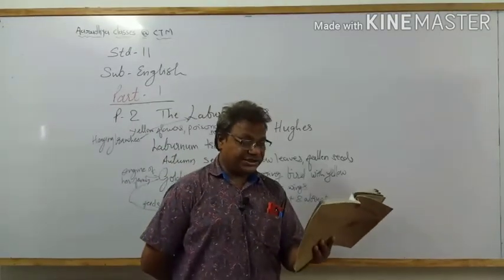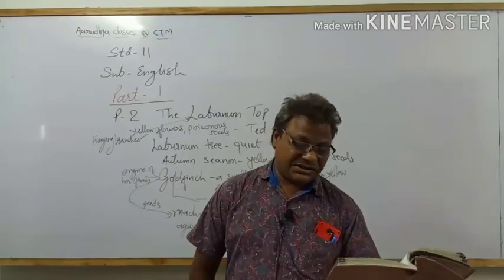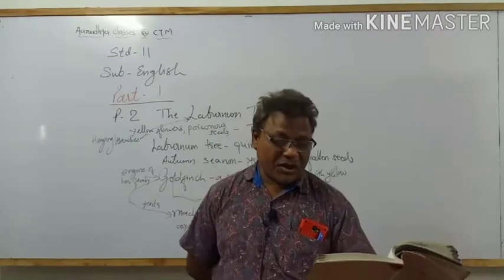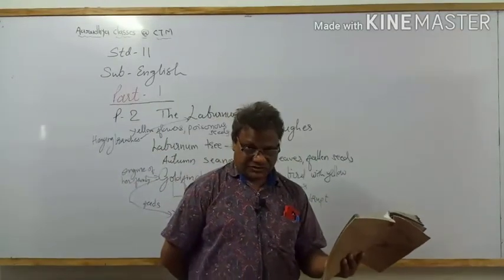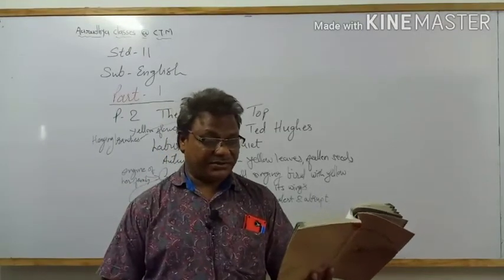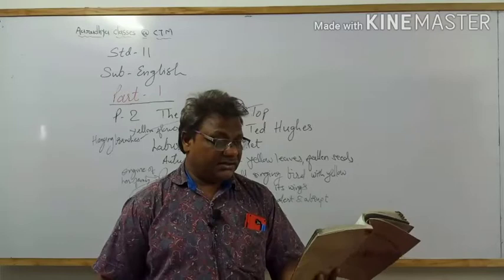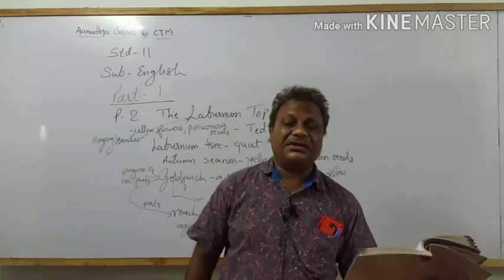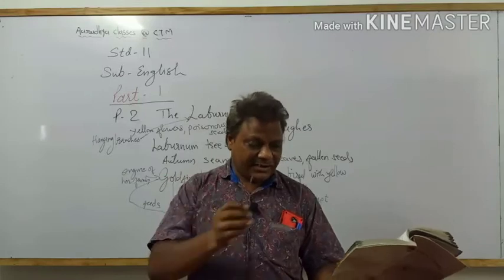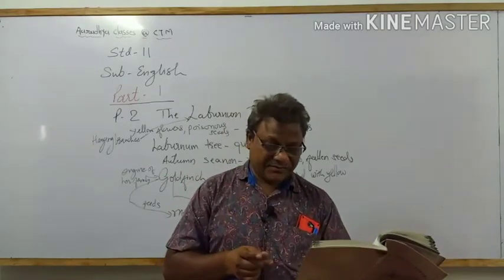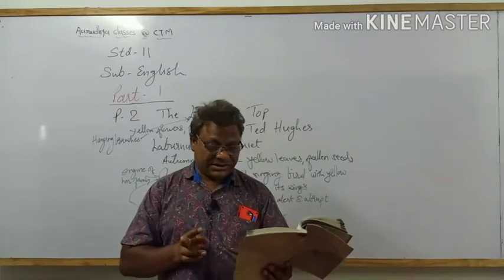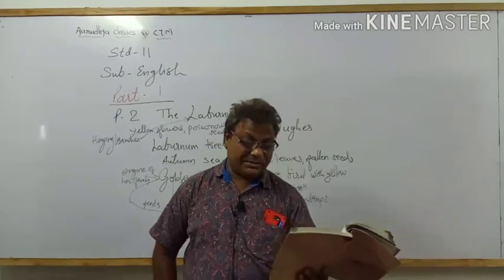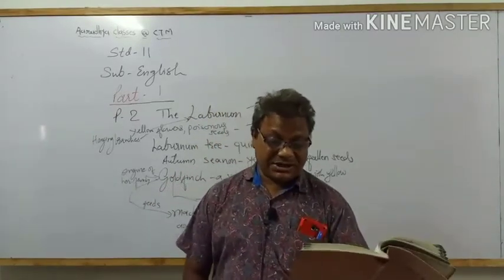In the second stanza: 'Till the goldfinch comes with a twitching chirrup' — chirrup is a sound produced by the goldfinch, so it is onomatopoeia. 'A suddenness, a startlement at a branch end' — the S sound is repeated in 'suddenness' and 'startlement', so it is alliteration. 'Then sleek as a lizard and alert and abrupt' — the goldfinch is compared with a lizard using the word 'as', so it is a simile. There is also alliteration because the A sound is repeated in 'as', 'alert', and 'abrupt', and 'and' is repeated twice, making it repetition as well.